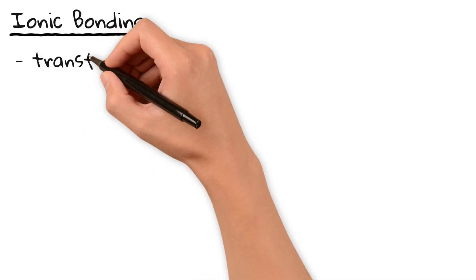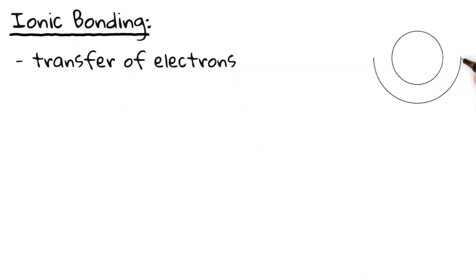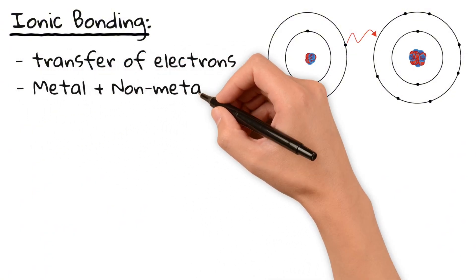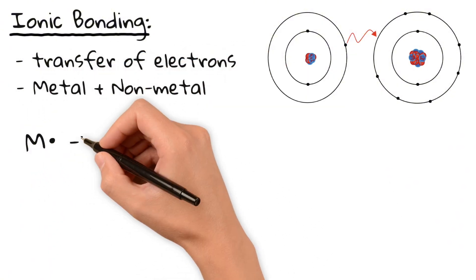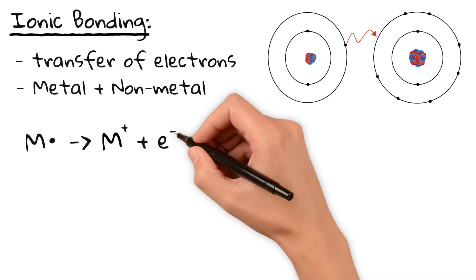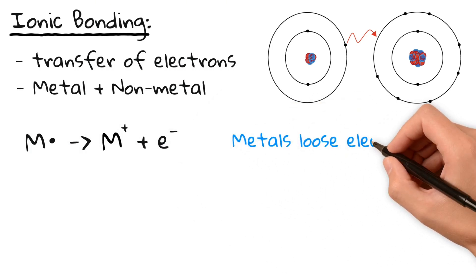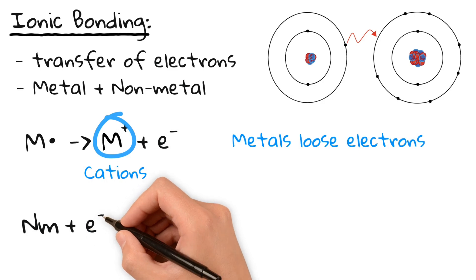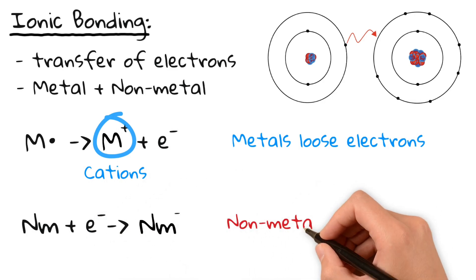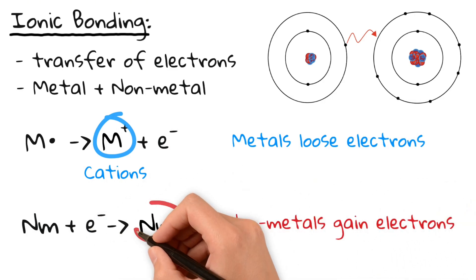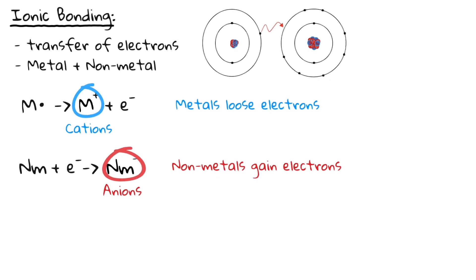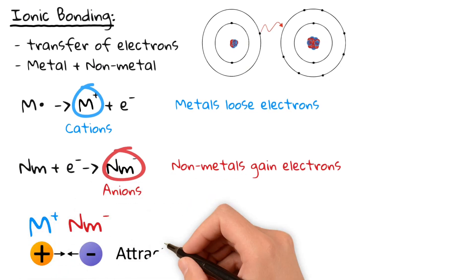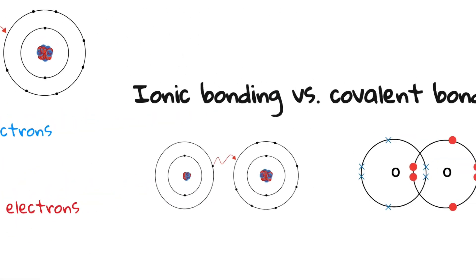Ionic bonding is when atoms transfer electrons to form charged particles called ions. This happens between a metal and a nonmetal. Metals always lose electrons, forming positive ions called cations. Nonmetals always gain electrons, forming negative ions called anions. These oppositely charged ions attract, forming a strong electrostatic force, which is the ionic bond.